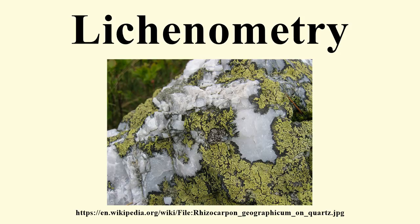Several methods exist for dating surfaces with the help of lichenometry. The most simple relies on a single largest lichen while other methods use more. There are also differences in the way the lichen is measured — some suggest that the largest diameter should be measured, while other scientists prefer the diameter of the largest inscribed circle. A problem in dating lichens is that several small lichens may fuse together, making them appear as a larger one of older age. Lichenometrist Tom Bradwell has listed five principal method families into which most other methods can be classified.